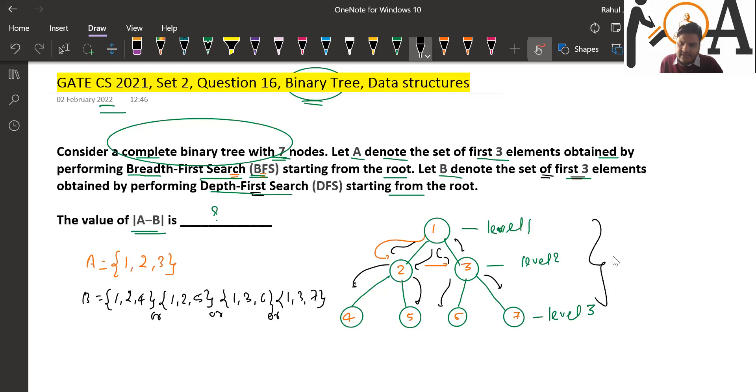Now what we need to find is the value of |A - B|. Set A = {1, 2, 3} contains one element from level 1 and two elements from level 2 in BFS. In DFS, set B contains one element from level 1, one element from level 2, and one element from level 3.